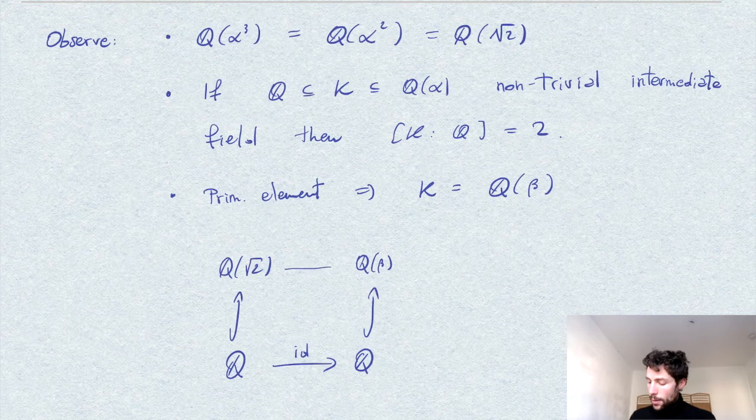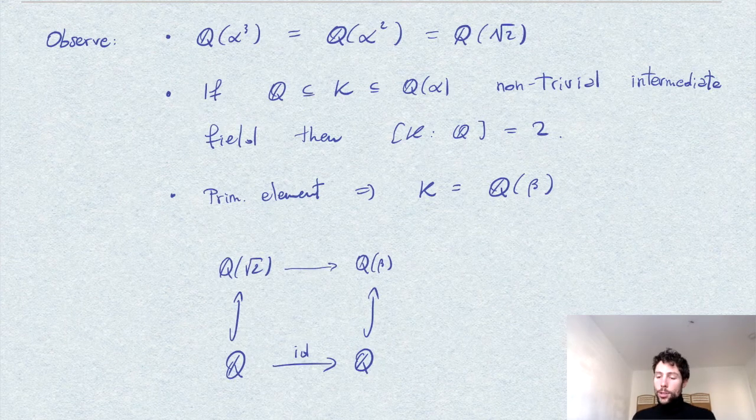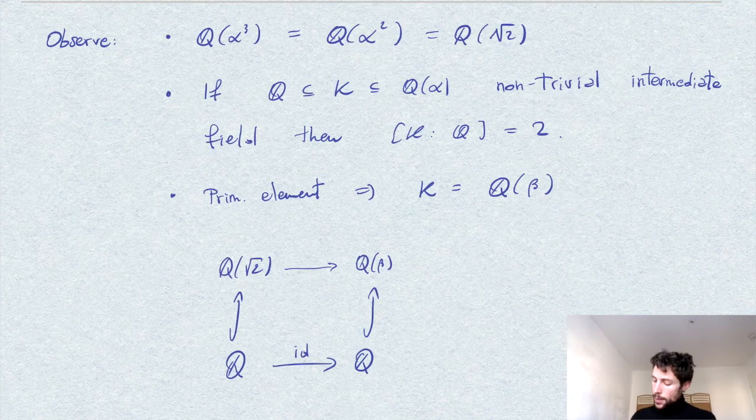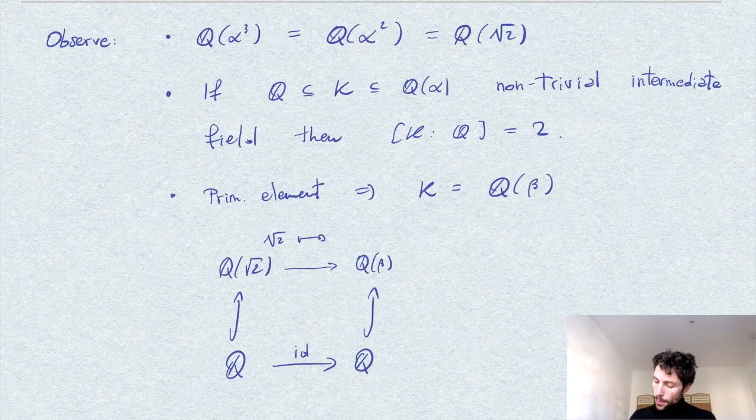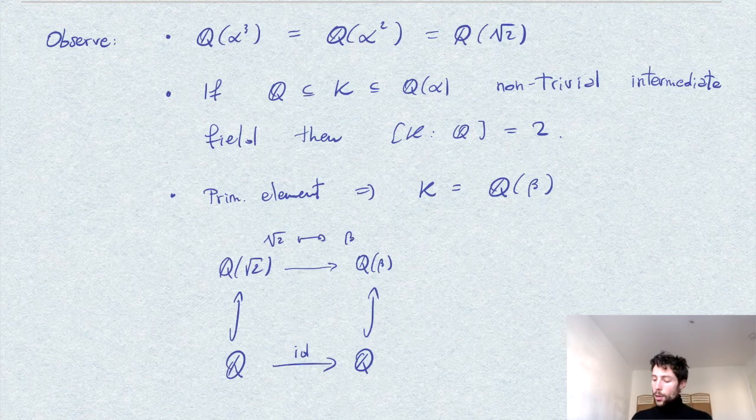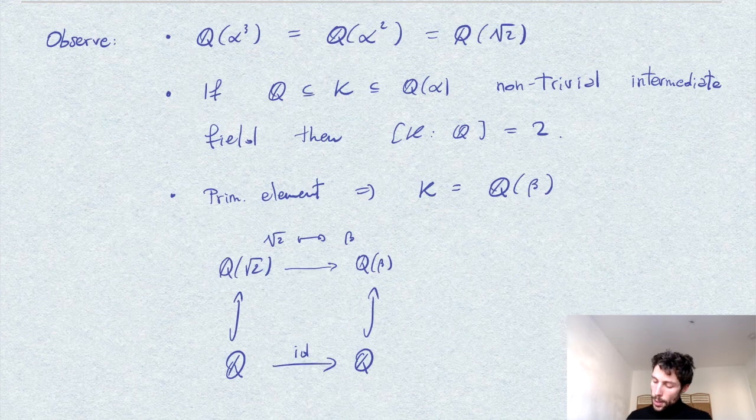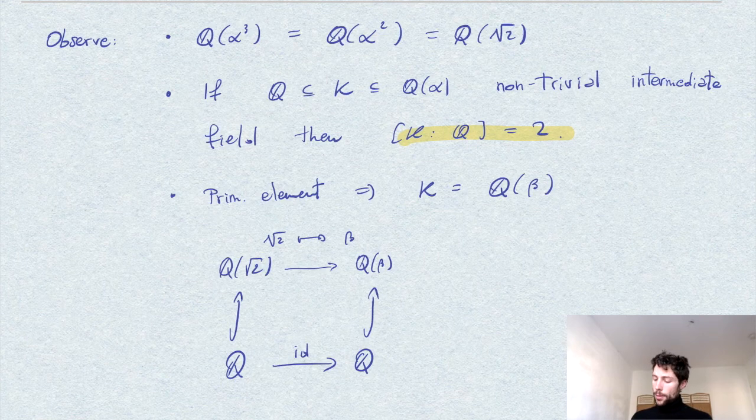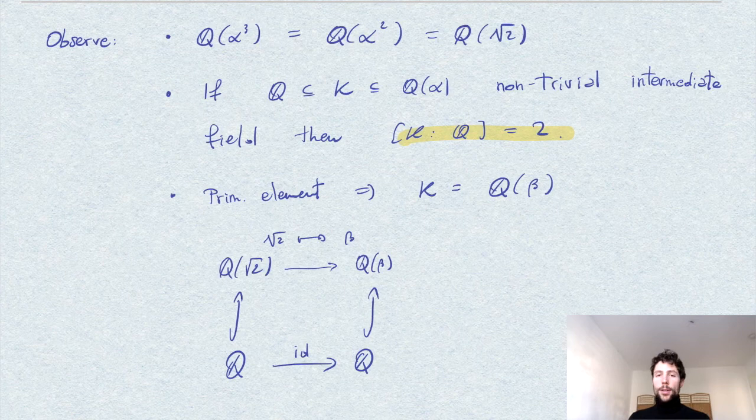We can conclude, using the fact that the extensions have degree 2, that Q(β) and Q(√2) are isomorphic as field extensions of Q.